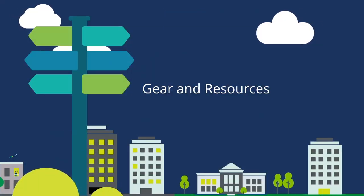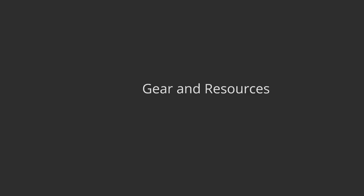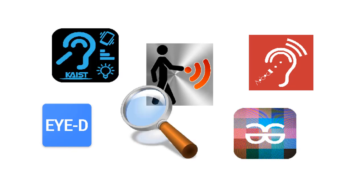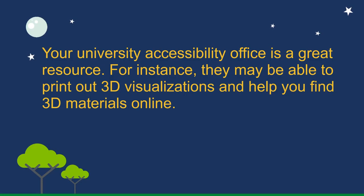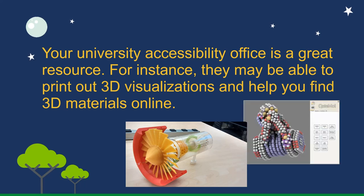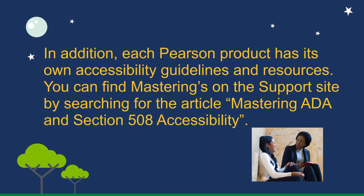Gear and Resources. Some students use specialized software and hardware, tablets or phone apps. Find out what they use and get them to demonstrate. This is fun and eye-opening and can give you teaching ideas that help everyone. Your university accessibility office is a great resource — for instance, they may be able to print out 3D visualizations and help you find 3D materials online. Each Pearson product has its own accessibility guidelines and resources. You can find Mastering's on the support site by searching for the article Mastering ADA and Section 508 Accessibility.